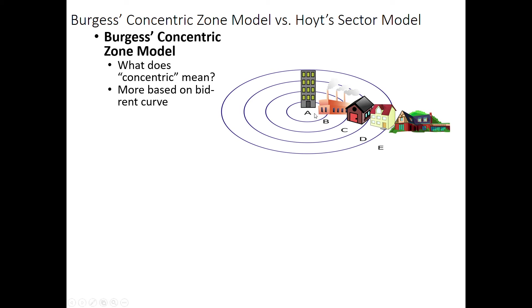The bid-rent curve is based on the cost of the land and how much money you're going to get back from it — that influences what you do with the land. That sets up what we'll get to later called a population density gradient. Population density will be higher closer to the middle of the concentric zone model, where you've got lower-class houses, and as you get farther out, population density decreases. Think of the suburbs — we have very few homes out here compared to the density of apartments and condominiums in downtown Chicago.